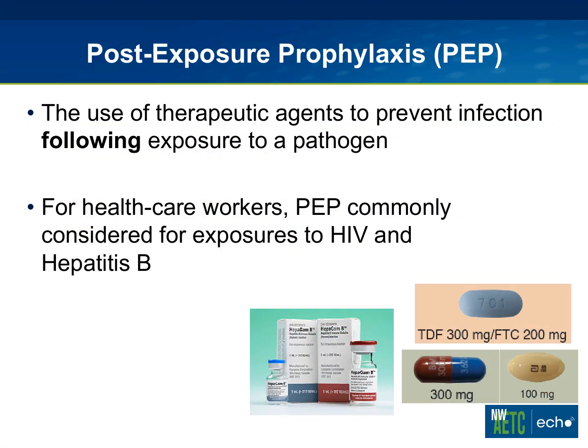Let's start with definitions. There's a lot in the news about PrEP, and I want to differentiate PEP from PrEP. PrEP would be pre-exposure prophylaxis, and PEP, of course, is post-exposure prophylaxis — the use of therapeutic agents to prevent infection following exposure to a given pathogen. When we're talking about healthcare worker exposures, we're really talking about HIV and hepatitis B mainly. Hepatitis C isn't that we can't do anything about it — we have nothing we can really do. For HIV we're talking about pills mainly, and for hepatitis B we're talking about immunoglobulin and vaccine.